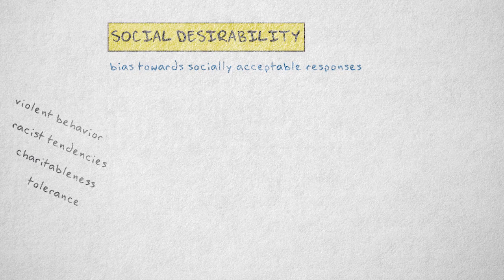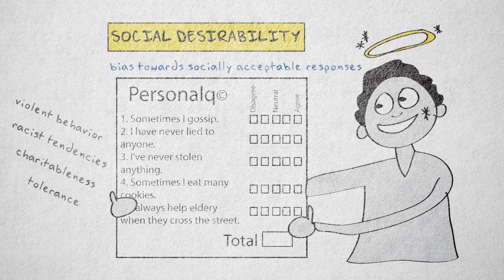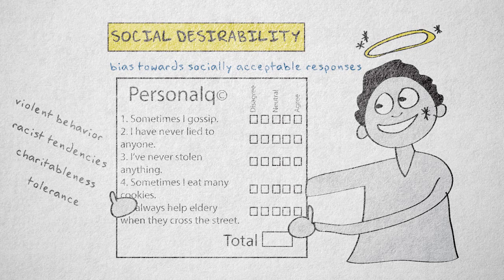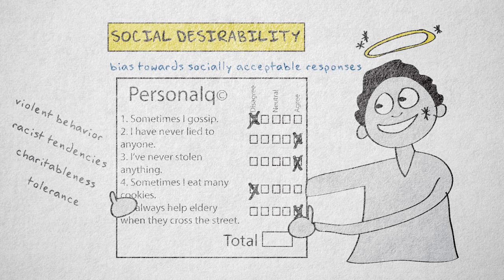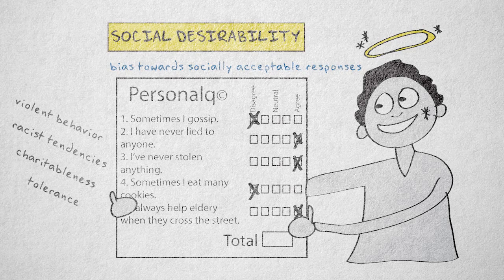It's possible to detect a social desirability bias by adding social desirability items, such as I've never stolen anything in my life, or I've never lied to anyone. The idea is that everyone has stolen something, or lied at least once in their lives, if only as a child stealing from or lying to their peers. If people strongly agree with these items, there's a fair chance that their responses to other questions are biased towards socially acceptable responses.